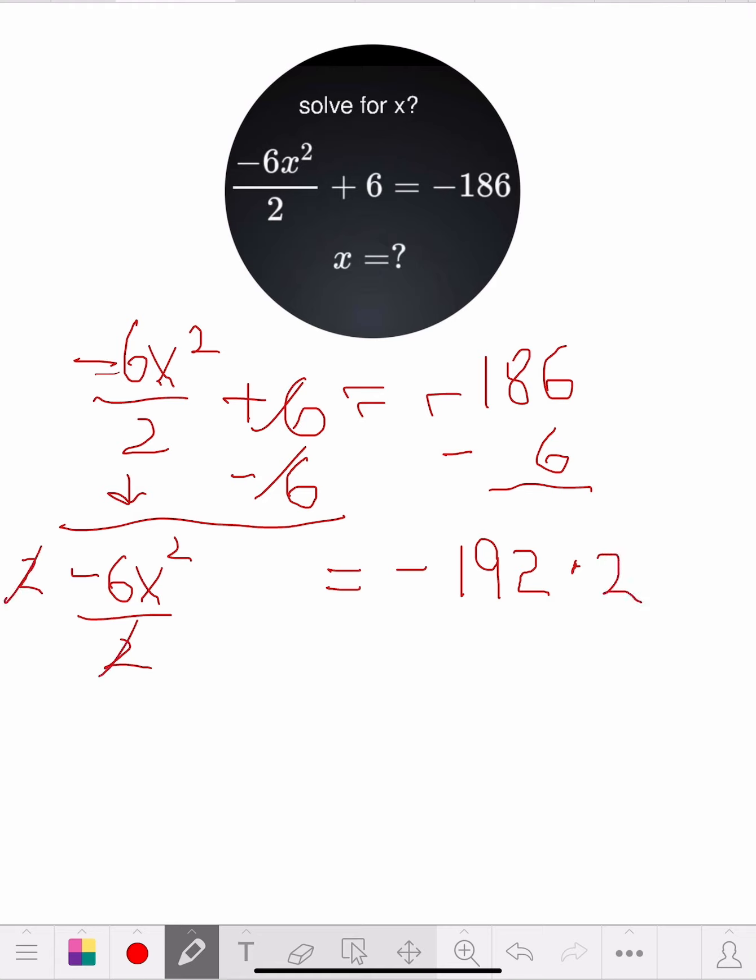Let's see what we've got here. These two cross each other out, so we come down with negative 6x squared. The equal sign comes down. Now 192 times 2 is 384, and this is a negative.